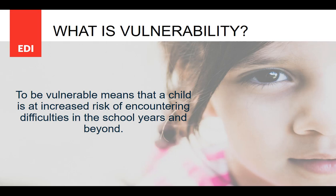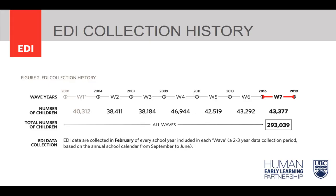When considering vulnerability rates, it is important to note that some level of developmental vulnerability is to be expected in populations of children. At HELP, we consider 10% to be a reasonable benchmark. This is based on biological and birth data and research from almost two decades of EDI data, where we have seen many neighborhoods that have had vulnerability rates of less than 10%. The following graphic shows the data collection history for the EDI in BC. The EDI is province-wide — all school districts participate. To date, we have collected data for over 290,000 kindergarten children in BC since 2001. It is a world-class data set.